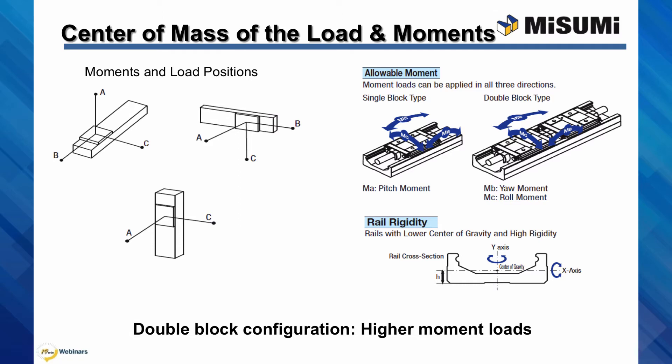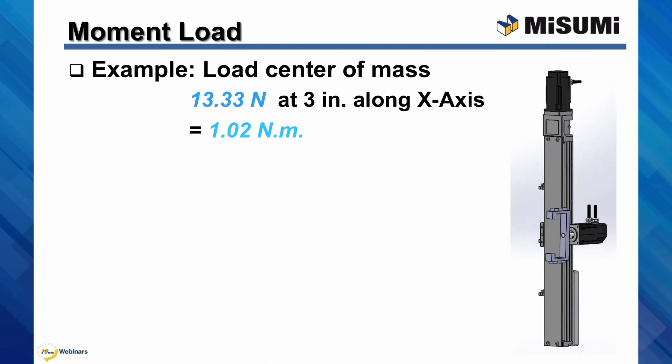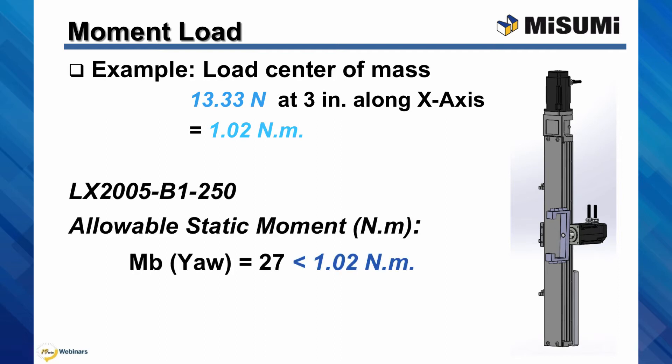Each direction needs to be evaluated and verified against the allowable moment load of the actuator. In the moment specs, you'll note that the MA moment is the pitch, the MB moment is the yaw, and the MC is the roll. For our example, the center of mass of the load is located at 3 inches from the actuator along the x-axis, or in this orientation the direction contributing to the yaw moment. The calculated moment from the weight of the load at 3 inches is 1 newton meter, which is also well within the allowable static moment of the LX2005-B1-250, thus verifying our current actuator selection so far.